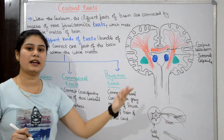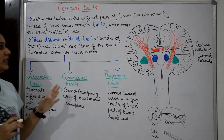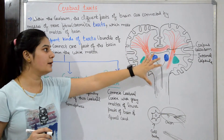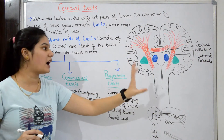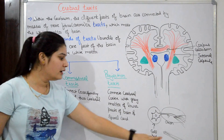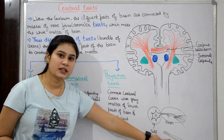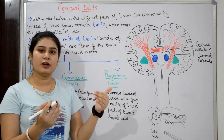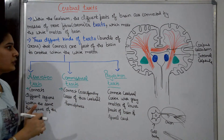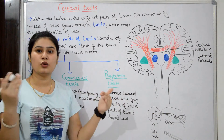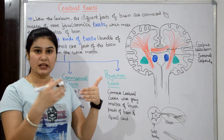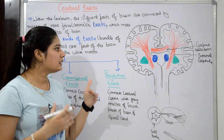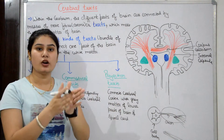Because axons and nerve fibers are white matter of the brain. So, cerebral tracts are bundles of axons inside the cerebrum connecting different parts of the brain. Their function is to allow different parts of the brain to communicate, coordinate, and exchange information with one another.